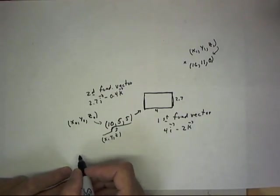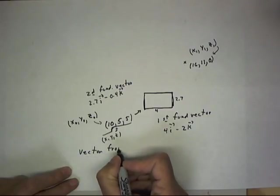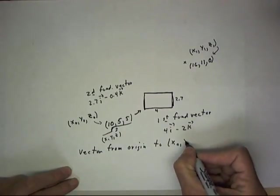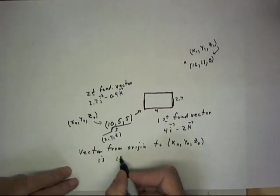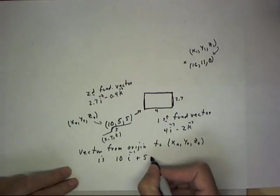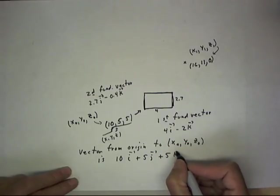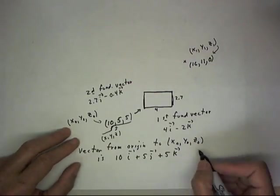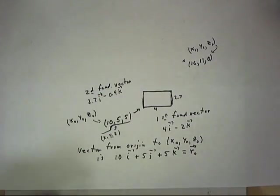So, the vector from the origin to x zero, y zero, and z zero is just ten i, because we start at the origin we've got to move ten units in this direction, plus five j, we've got to go five units in the y direction, plus five k. And we're going to call that vector r sub zero.